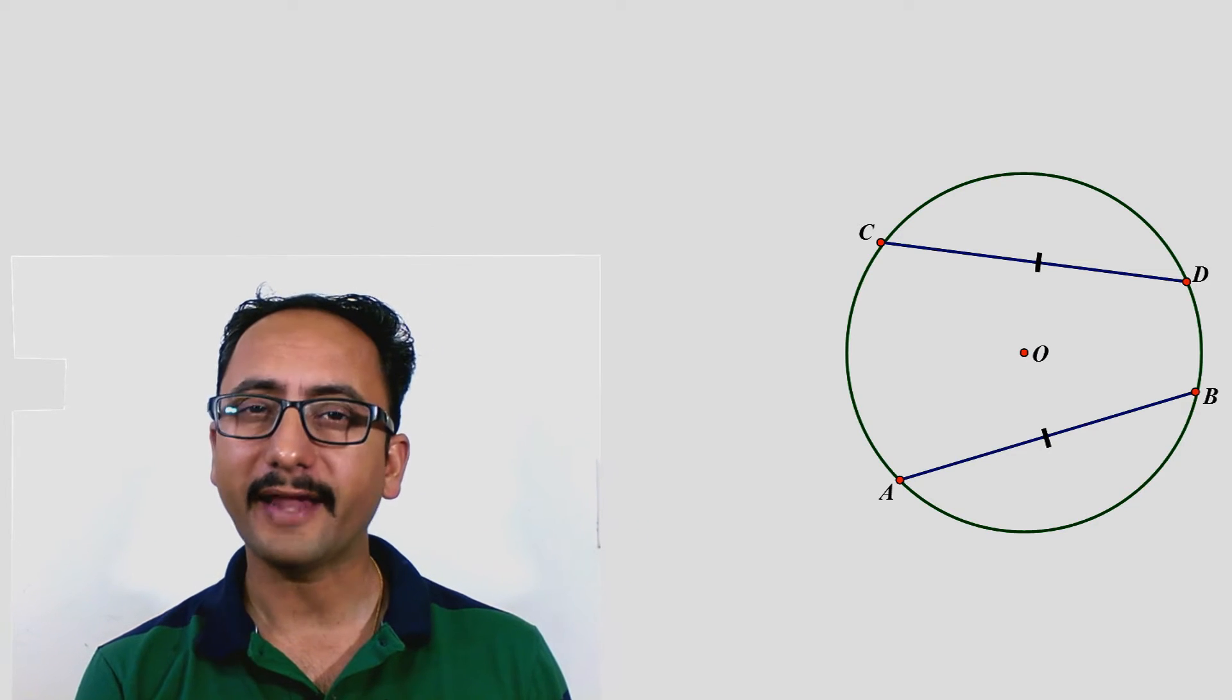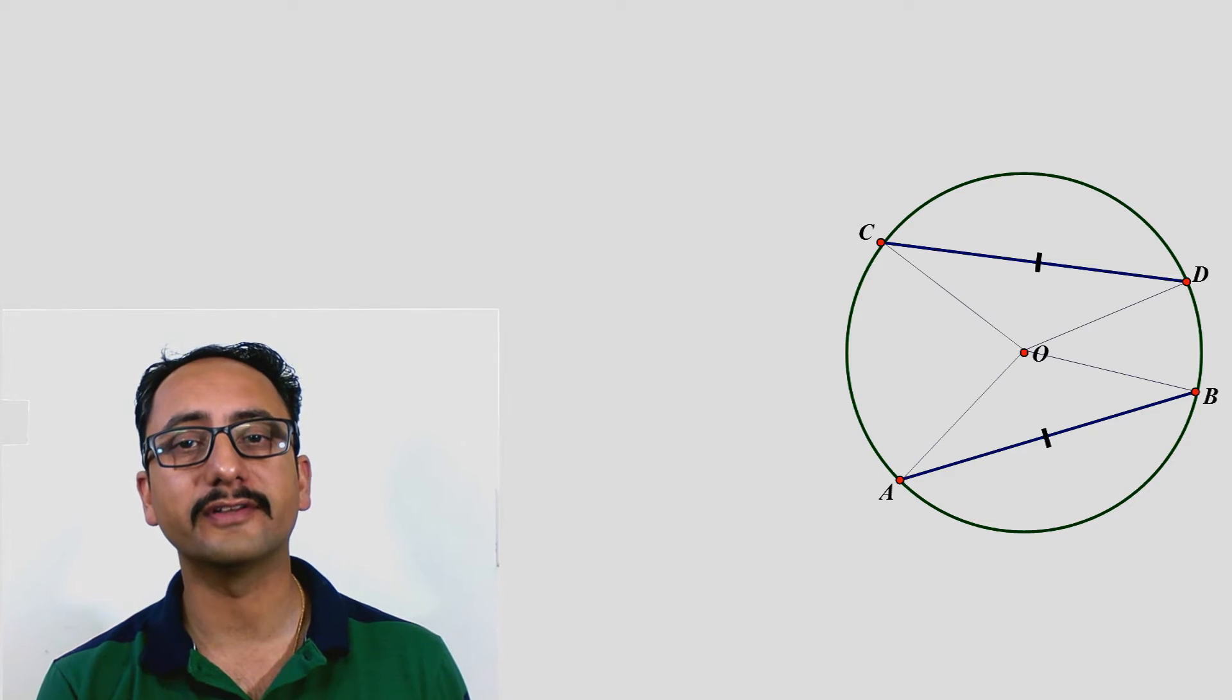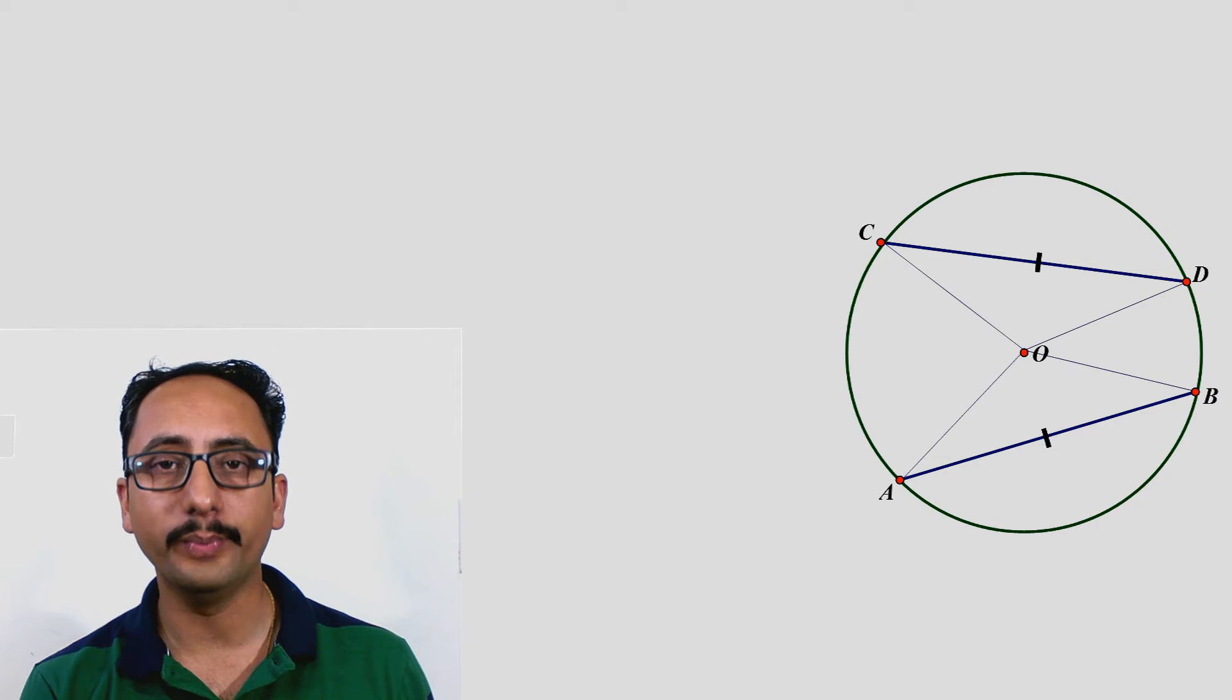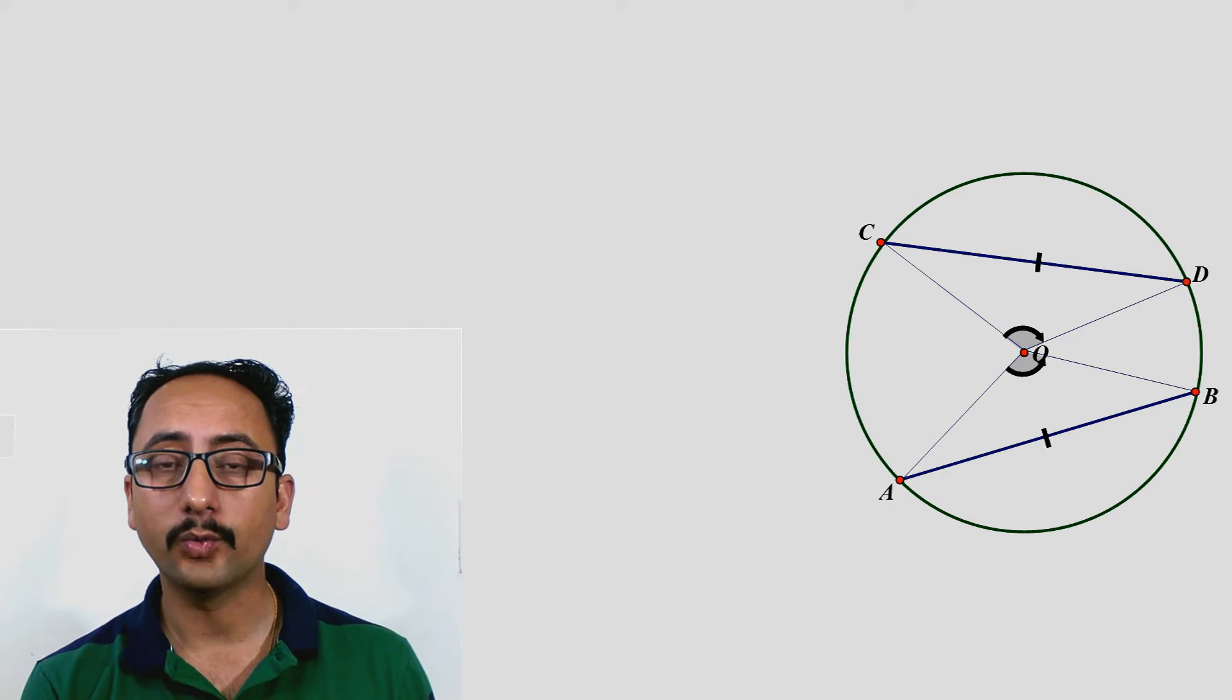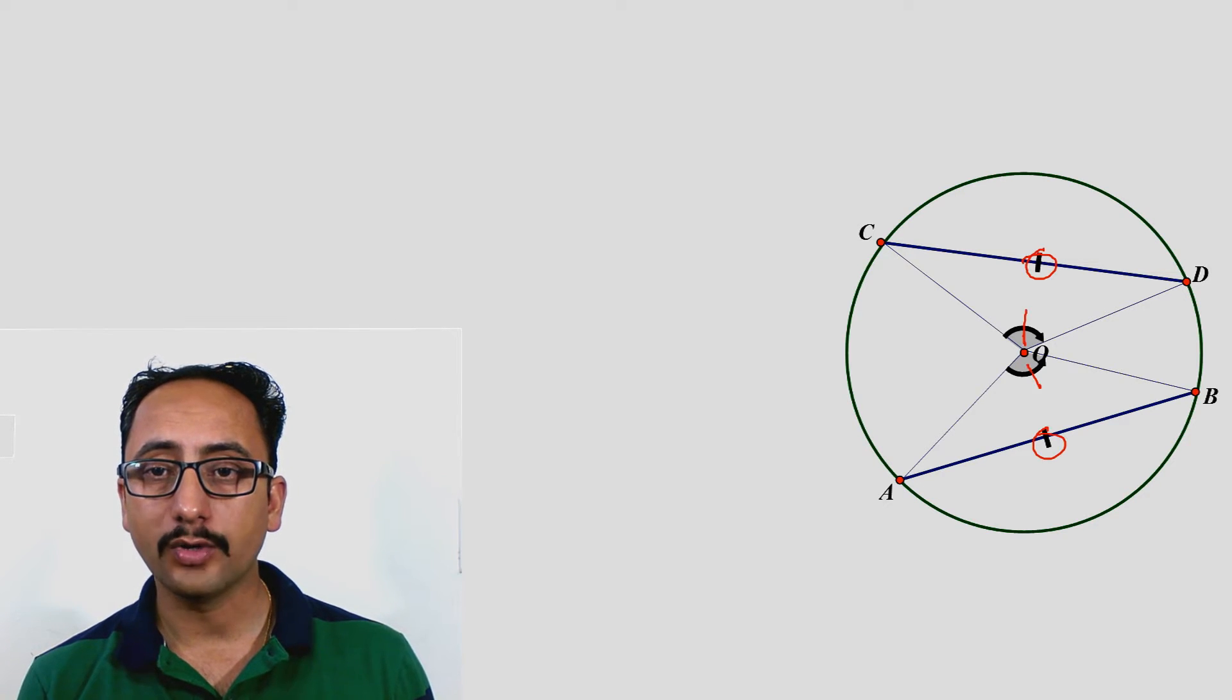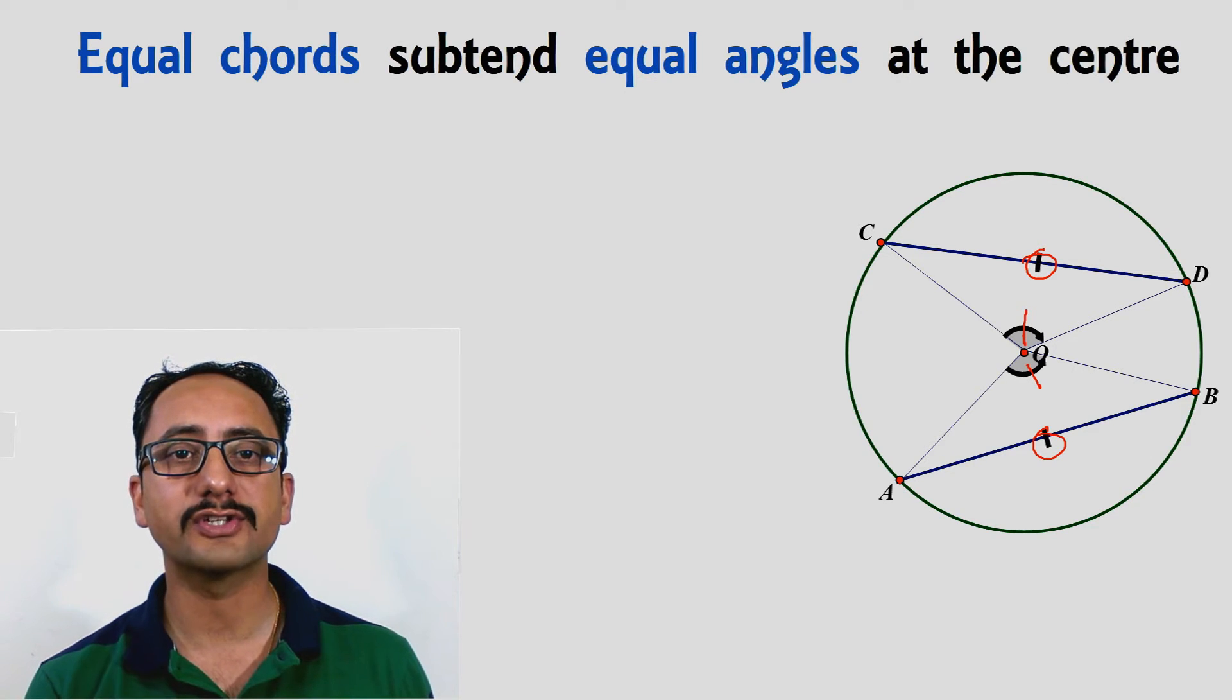In that case, the angle subtended by both the chords at the center, that is angle AOB and angle COD, will be equal in length. This means equal chords subtend equal angles at the center, and this is the statement of the theorem.